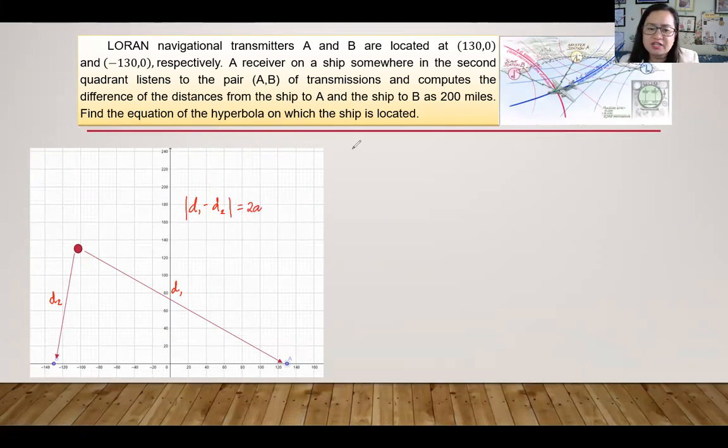So then we can say that 2A is equal to 200 miles. So dividing both sides by 2, then A is equal to 100.